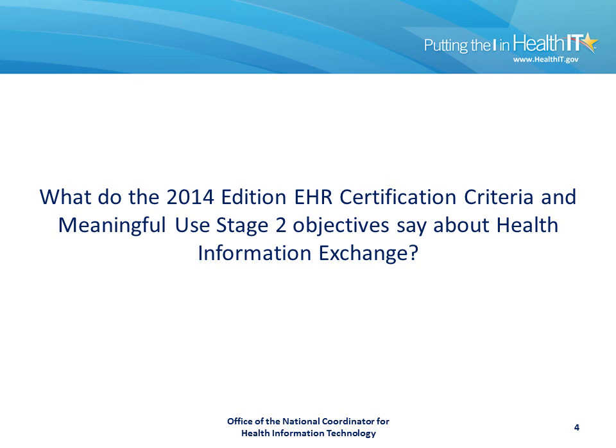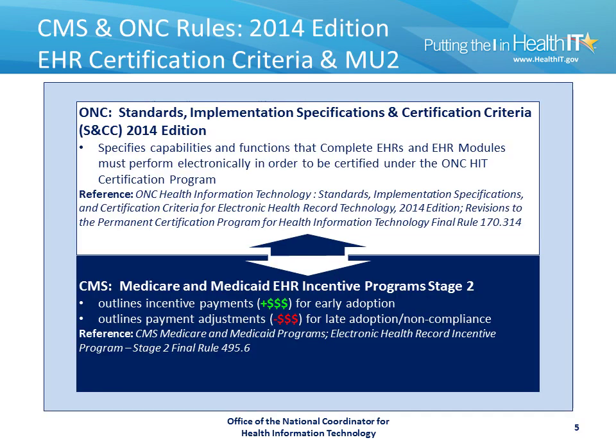So what did the 2014 edition EHR Certification Criteria, associated with Meaningful Use Stage 2, say about health information exchange? There are two rules associated with Meaningful Use Stage 2 and the 2014 edition Standards and Certification Criteria. The first is the Standards Implementation Specifications and Certification Criteria issued by ONC, 2014 edition, which specifies the data and standards requirements for certified electronic health record technology needed to achieve meaningful use. On the other side, there's Medicare and Medicaid's EHR Incentive Program Stage 2, published by CMS, which outlines incentive payments for early adoption as well as payment adjustments for late adoption or non-compliance.